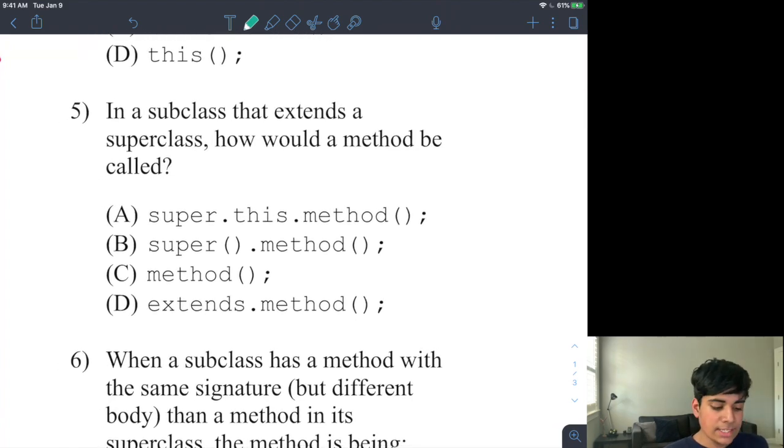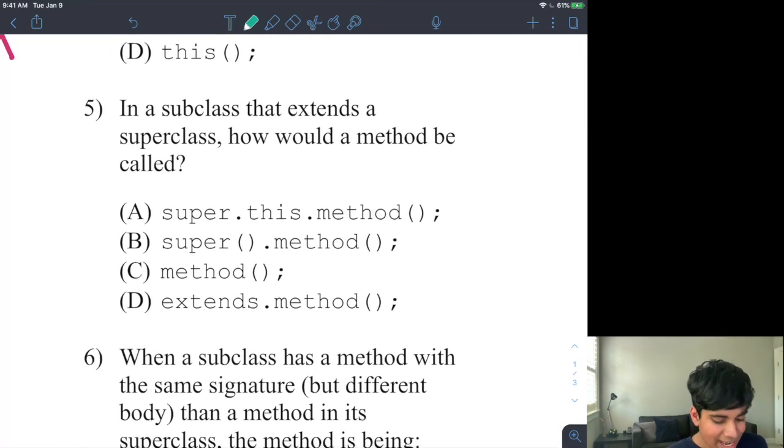Number five: in a subclass that extends a superclass, how would a method be called? So how would you call a method inside of a subclass that belongs to a superclass? And really the correct answer here is just going to be C. There's no change. You just call the method opening close parentheses. You don't use super. Remember super, like here, this super.this.method, you don't do that. You could do super.method, that's technically an alternative way to do it, but you cannot do super.this.method. So that's not correct.